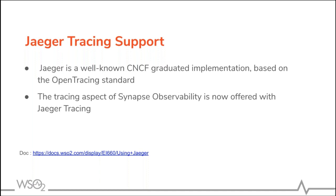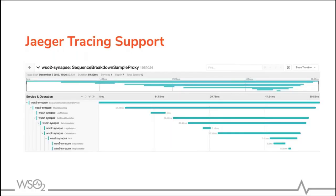In this release, we have focused on giving fine-grained tracing support using Jaeger tracing. Tracing provides vital information regarding the round-trip of a service invocation of EI mediation flows. Jaeger is a well-known CNCF graduated implementation based on the OpenTracing standard. Once you enable statistics monitoring and message tracing for Jaeger, you can trace a message including the message payload throughout the mediation flow. Once the trace data is available, the published data can then be visualized via the Jaeger UI. In this slide, you can see how tracing data is viewed from the Jaeger UI for a mediation flow running in the EI server.